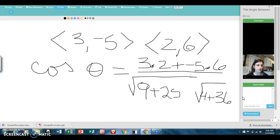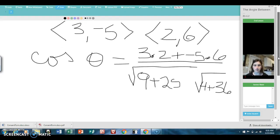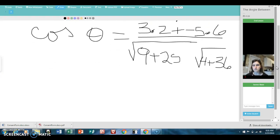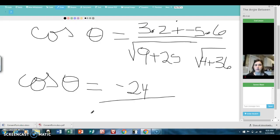So now is the time for us to use our calculators. Let's simplify it a little bit. Cosine theta equals—let's see, we've got 6 minus 30 on the top—negative 24 over the square root of 34 times 40.